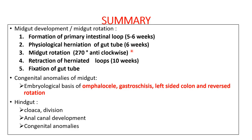In summary, midgut development involves five steps: formation of primary intestinal loops by the fifth week, physiological herniation of the gut tube by the sixth week persisting until the tenth week, midgut rotation of 270 degrees anticlockwise coinciding with physiological herniation and retraction, retraction of herniated loops beginning at the tenth week, and ultimate fixation of the gut tube. Hindgut development covered the cloaca, its division by the urorectal septum, anal canal development, and associated congenital anomalies. This concludes our lecture on the development of the gastrointestinal tract — foregut, midgut, and hindgut.